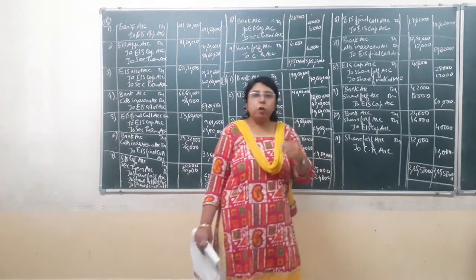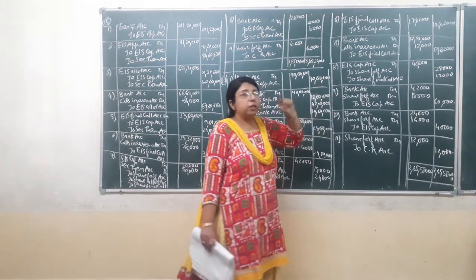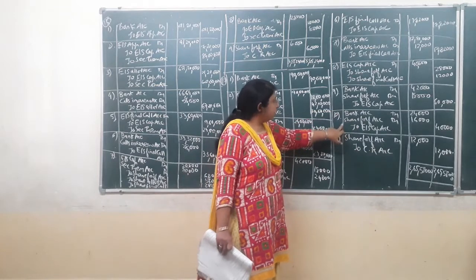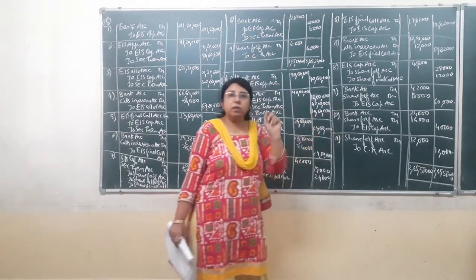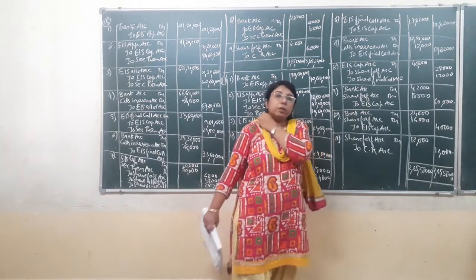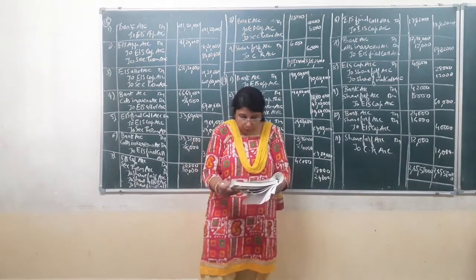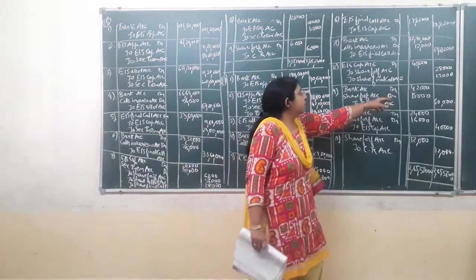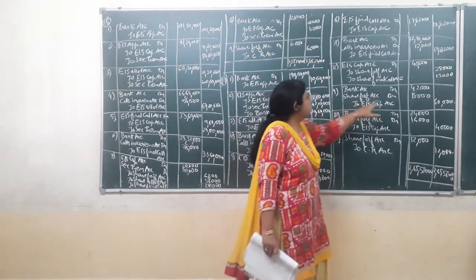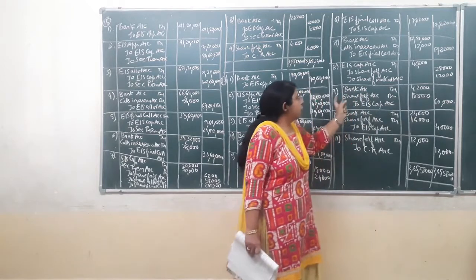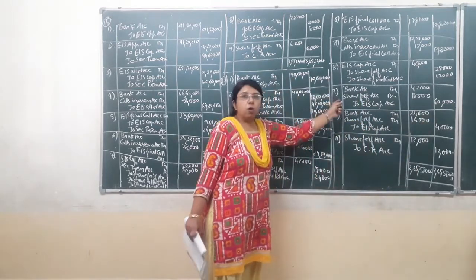Now the forfeited shares of JSA are to be reissued. The first journal entry is for reissue of the 6,000 shares of Siddharaj, and the next journal entry is for reissue of 4,000 shares of JSA. For the 6,000 shares of Siddharaj: it is mentioned that Siddharaj's shares are reissued at Rs. 7 per share. 6,000 multiplied by Rs. 7 comes to Rs. 42,000 debited to bank. The amount of discount is credited to share forfeiture account: 6,000 into Rs. 3 discount comes to Rs. 18,000, so share forfeiture account is debited by Rs. 18,000 to equity share capital account credit of Rs. 60,000.